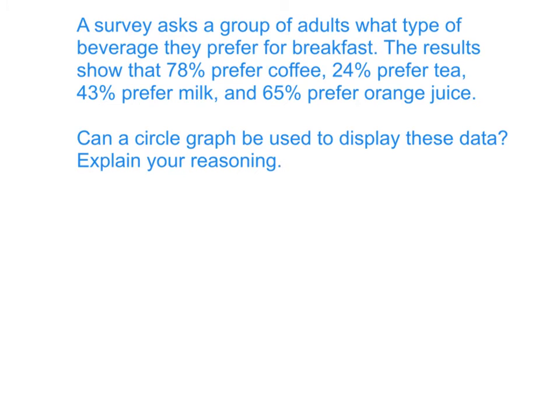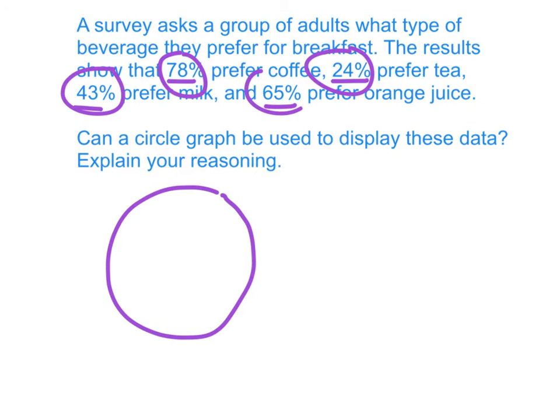Let's take a look at this next question. It says a survey asked a group of adults what type of beverage they prefer for breakfast. The survey results said 78% coffee, 24% tea, 43% milk, and 65% orange juice. Could you make a circle graph to display these results? Well, think about this - if I have 78%, 24%, 43%, and 65%, if you add all of those up they're going to be way more than 100%. So I cannot make a circle graph because the percents need to add up to 100.